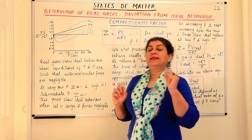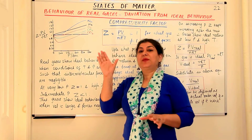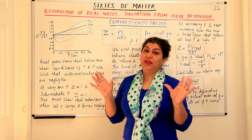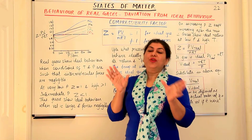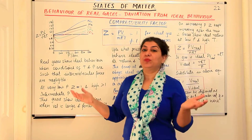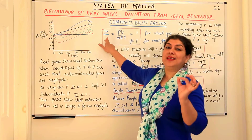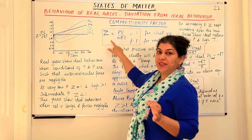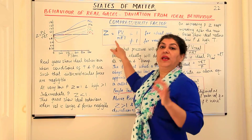We know that the ideal gas equation is PV = nRT. So let us say PV has a value of 20 and nRT would also have a value of 20 if the gas is ideal, because PV = nRT. The ratio of PV over nRT would be equal to 1, because 20 upon 20 is 1. This ratio is known as Z, or the compressibility factor. Z = PV / nRT.